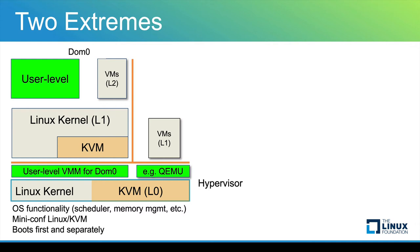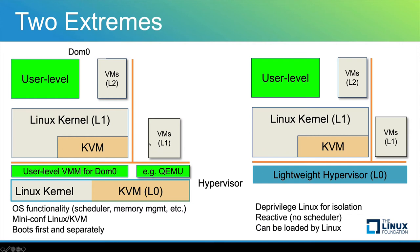For other VMs, we probably need to use QEMU. So this is one implementation. The other side is the lightweight hypervisor, which simply deprivileges Linux for isolation and it's just reactive. So as long as the guest Linux behaves well, it doesn't generate a VM exit. And this can be loaded by Linux at early boot time as long as Linux was healthy at that time. And the common thing is again IO passthrough.